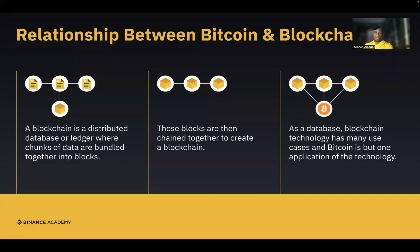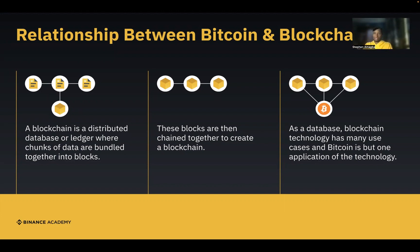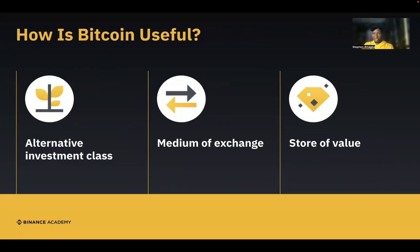Let's talk about the relationship between bitcoin and blockchain. Blockchain is a distributed database where chunks of data are bundled together into blocks — like a spreadsheet where information is tied together. These blocks are chained together to form a blockchain. Blockchain technology has many use cases, and bitcoin is just one of those applications. Bitcoin is not the same as blockchain; bitcoin is an application built on blockchain technology — it's very important to know that distinction.